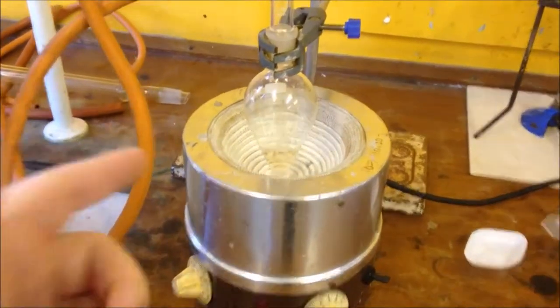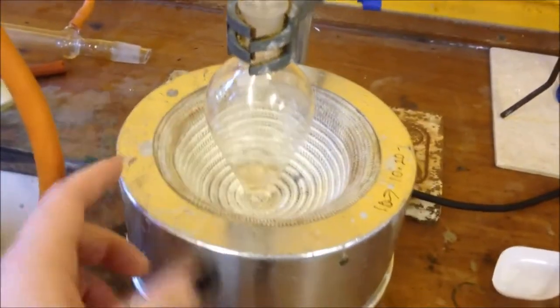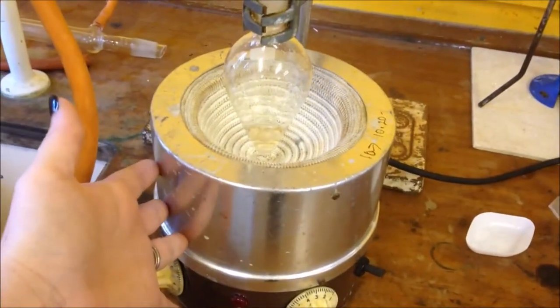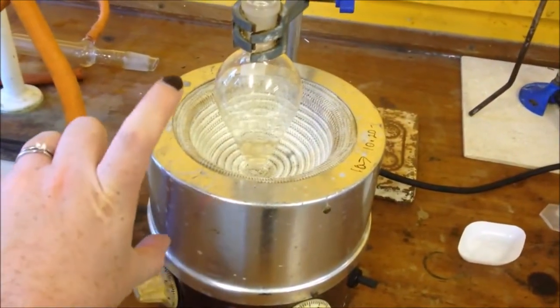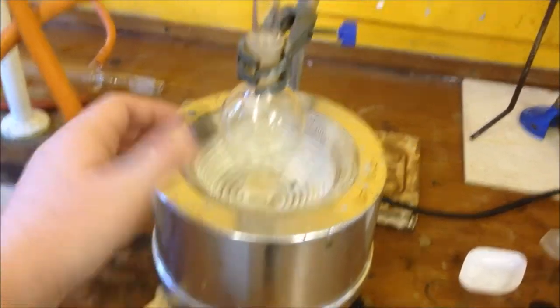Here we're going to be making aspirin by reflux. We have our pear-shaped flask. This is what we're going to be using as a water bath. You could also use a beaker on a hot plate and heat it up.